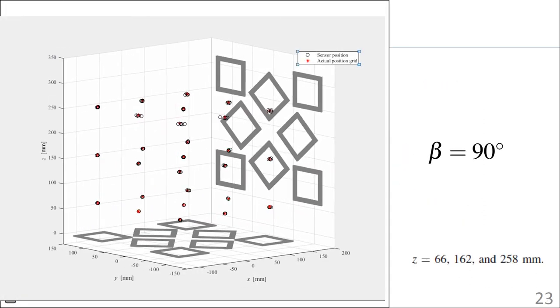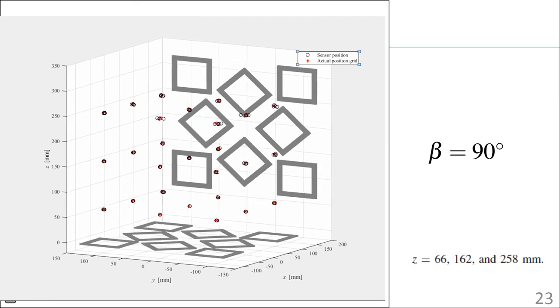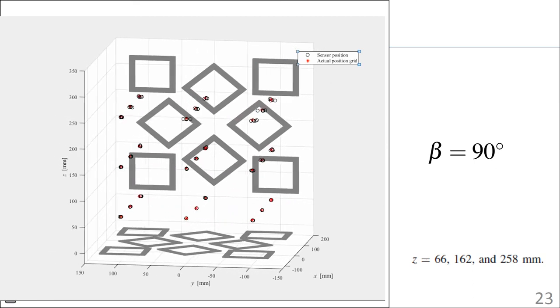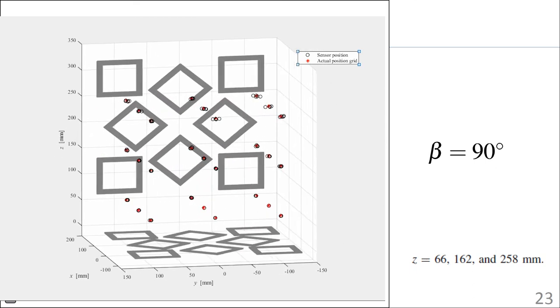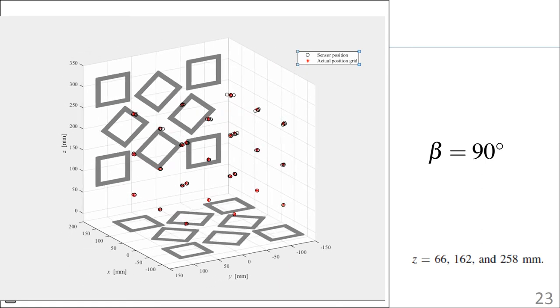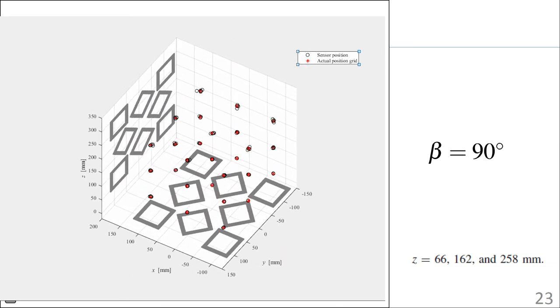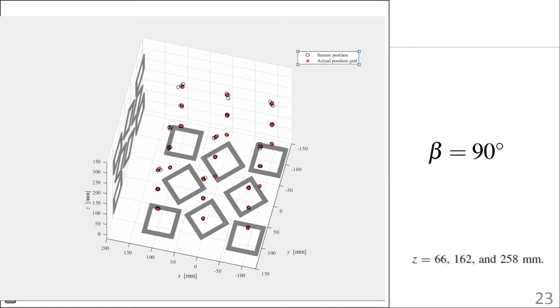This animation shows the results of the fiducial registration accuracy measurement for a tilt angle of 90 degrees. The reference grid locations are shown in red and reported sensor positions are shown in black. Three grid heights were used for taking these measurements.